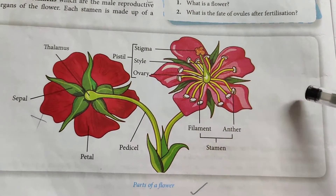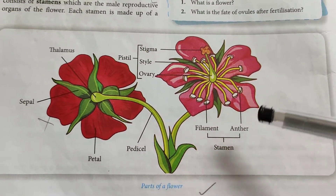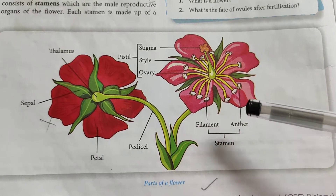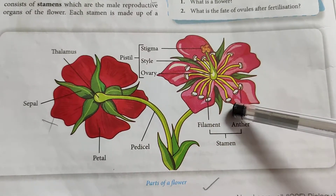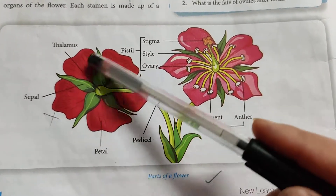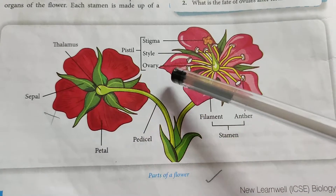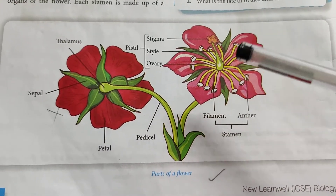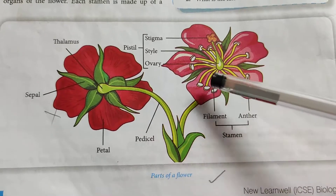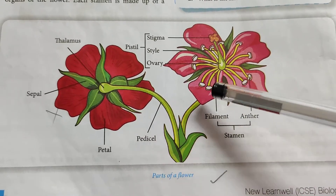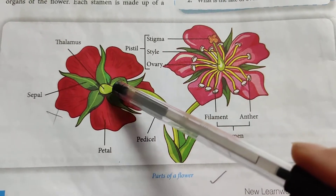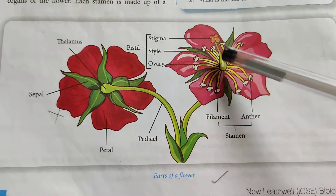Hello students, today I will continue with the same chapter, plant life, and I will begin with the topic flower. Flower is the most attractive part of the plant. It produces seeds for the plant and is the organ of sexual reproduction in the plant. I will teach you the different parts of a flower.